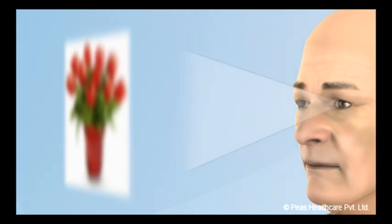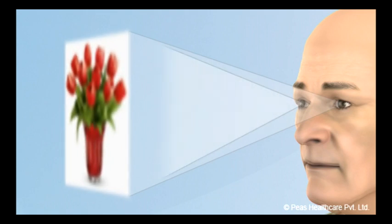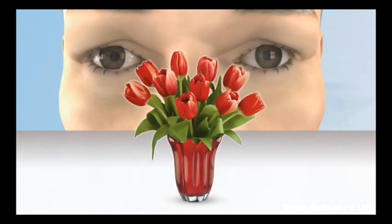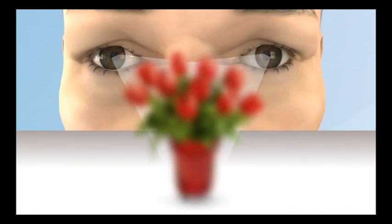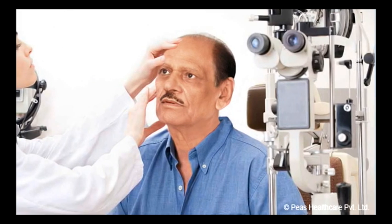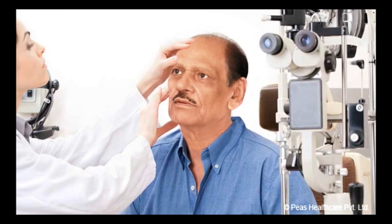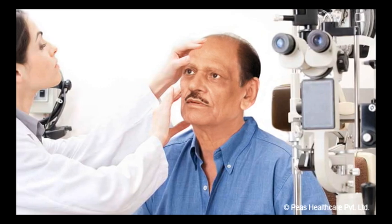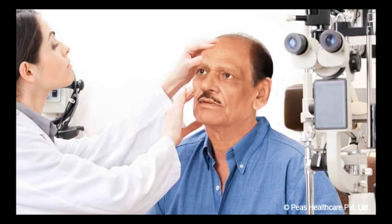If the vision of only one eye is affected, you may not notice any symptoms, as the other good eye often compensates. You are more likely to notice symptoms when both eyes are affected. Older people should have regular eye checks to check each eye separately for early ARMD.